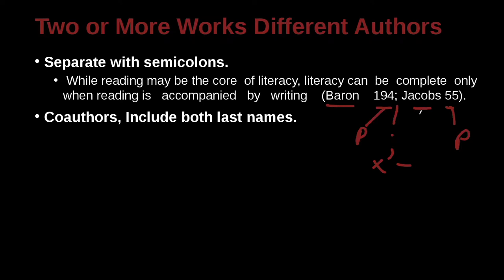Co-authors: include both last names. So in this case, we have two authors on the same paper — Doris and Edric. That's two. Remember, if we have three or more, we're going to use 'et al.' The number after is your page number.